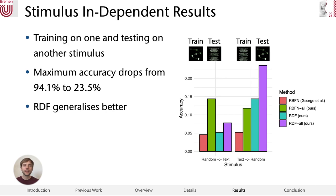In a second experiment, we train on one stimulus, like the random moving dot, and evaluate on the data where the participants read the poem. In general, we find that the maximum accuracy drops significantly, from before 94% to now 23%.